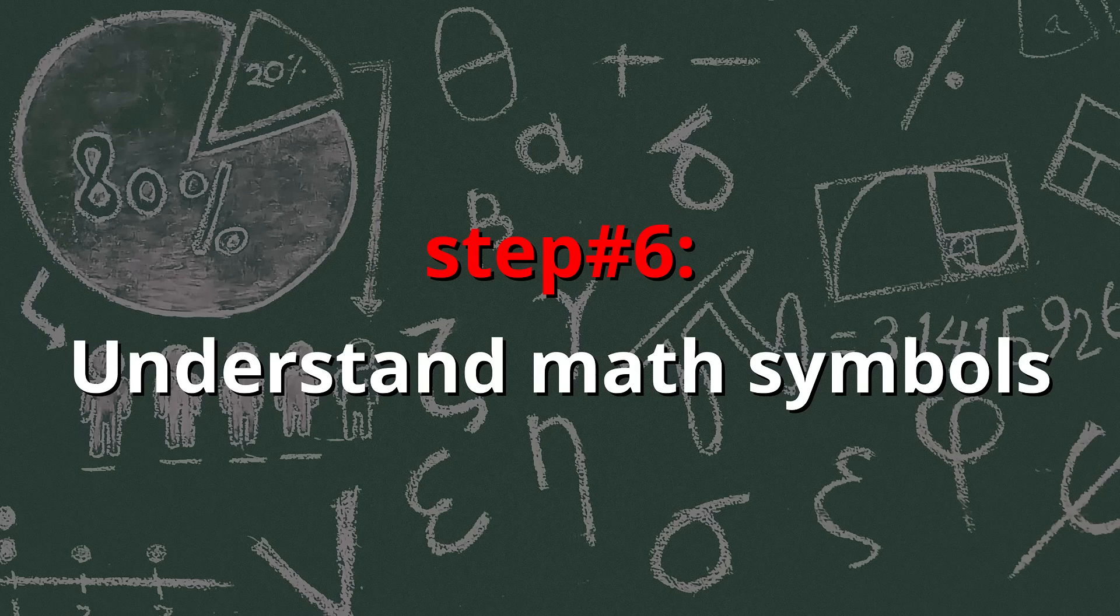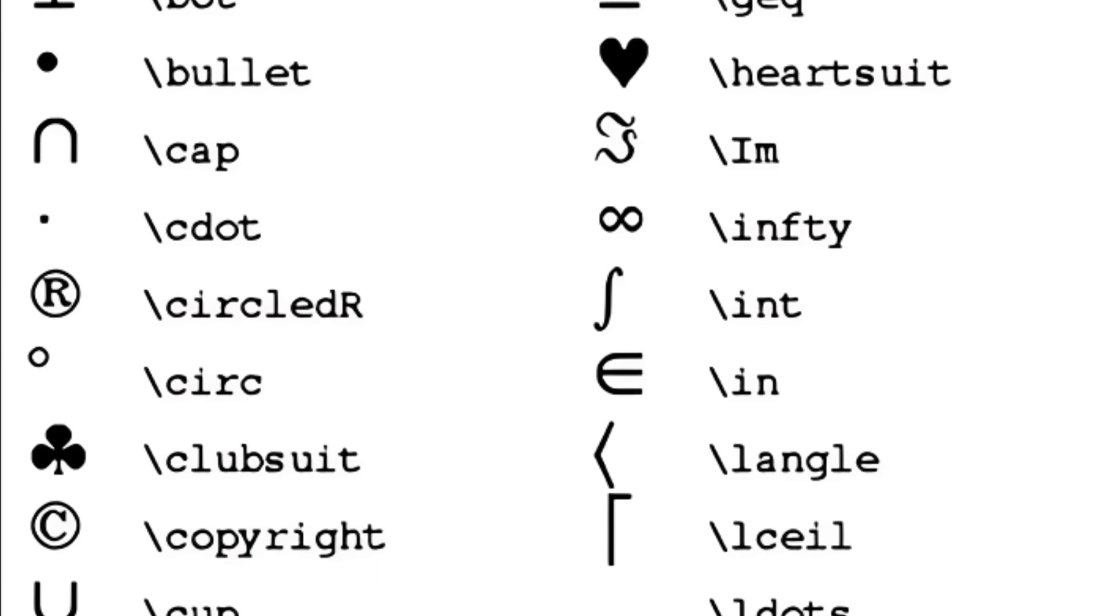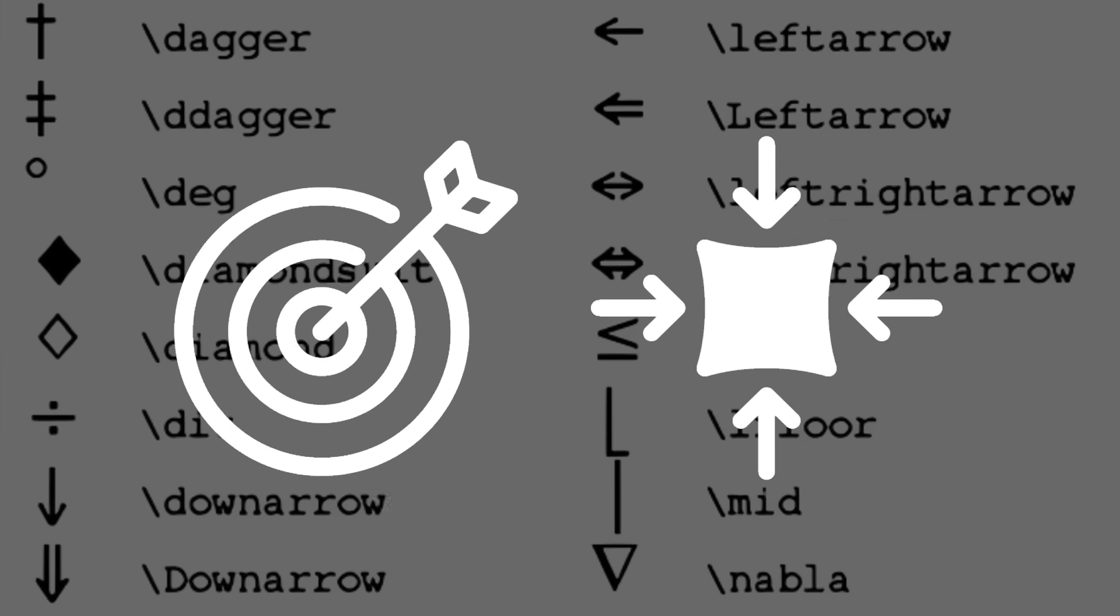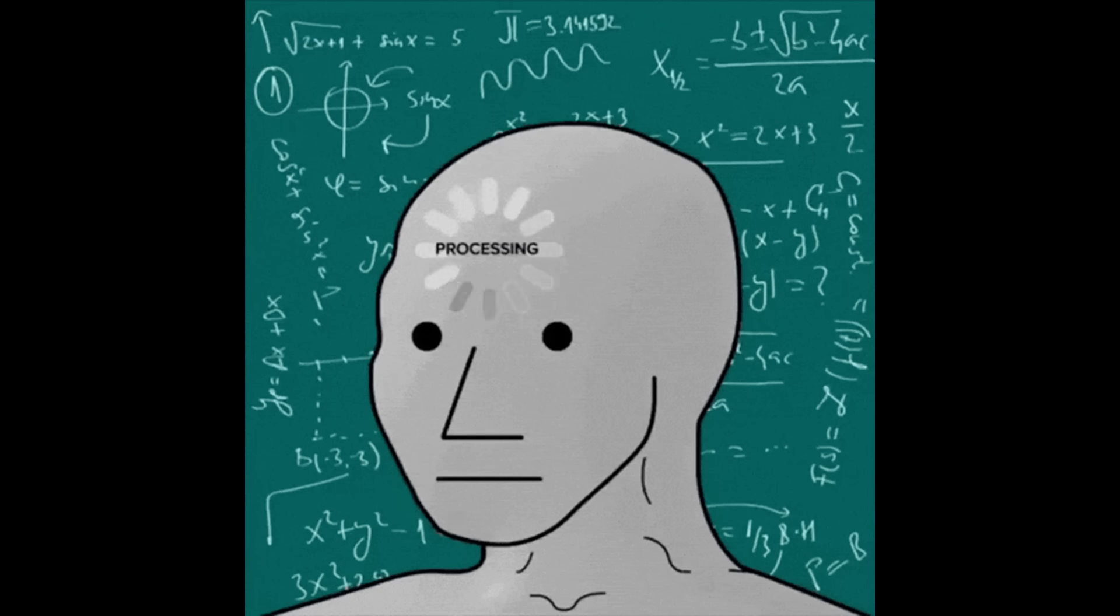Step number six, understand math symbols. Mathematical symbols are universal abbreviations that let us express complex ideas in a precise and compact way. Think about it, when you read 3 plus 5, it's instant. But if you saw this and didn't know what the symbols meant, your brain would just freeze.